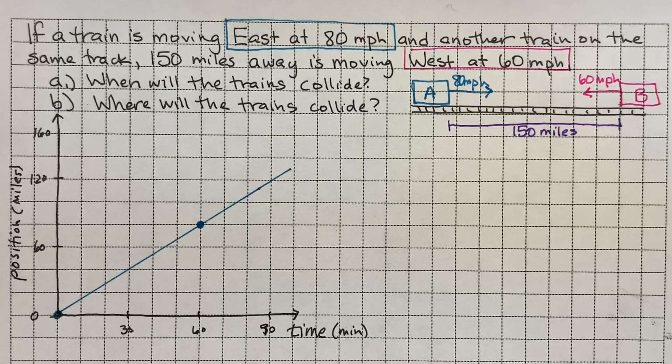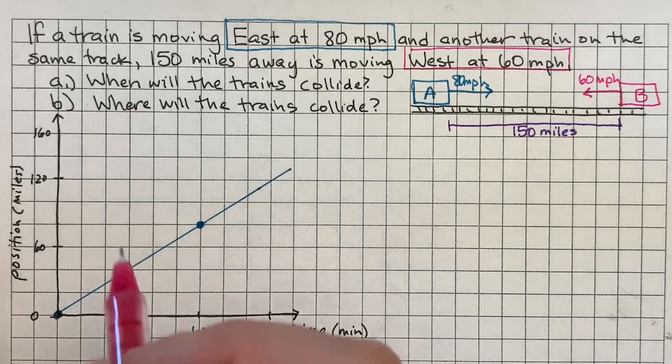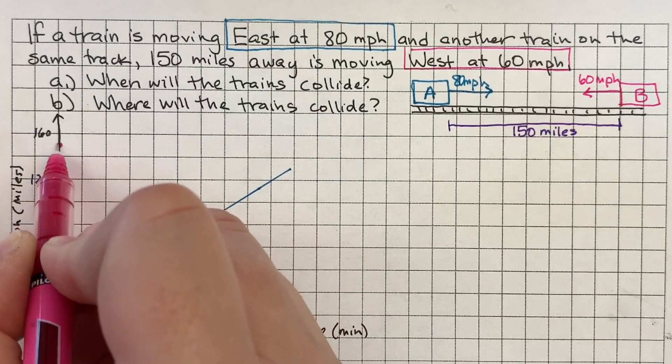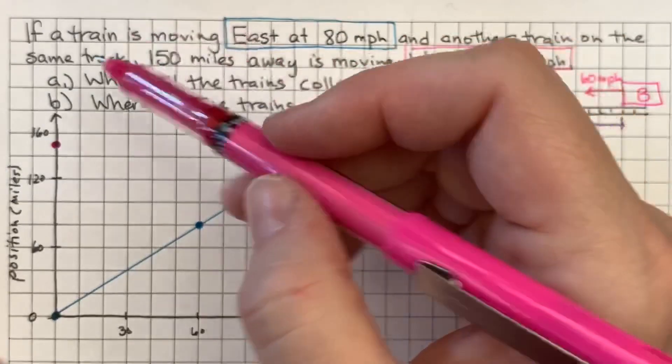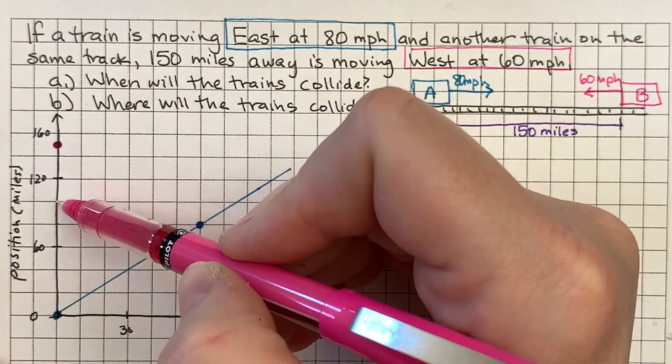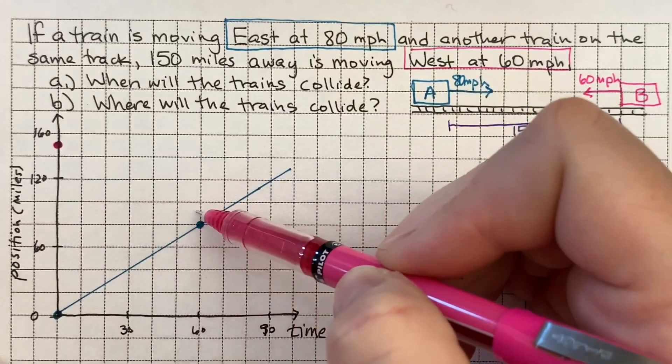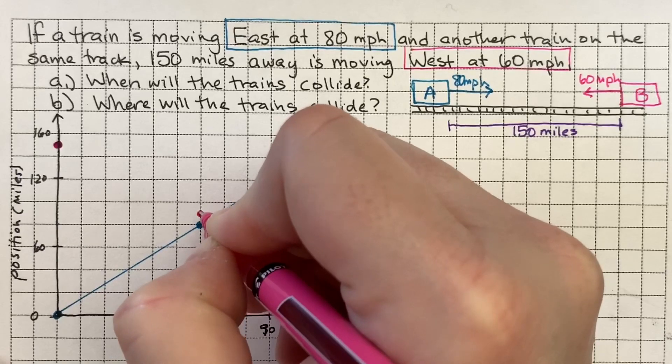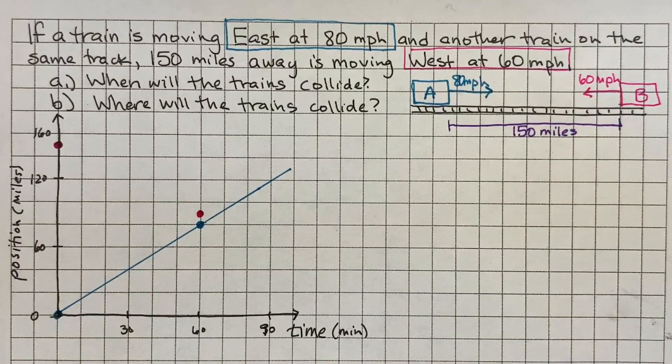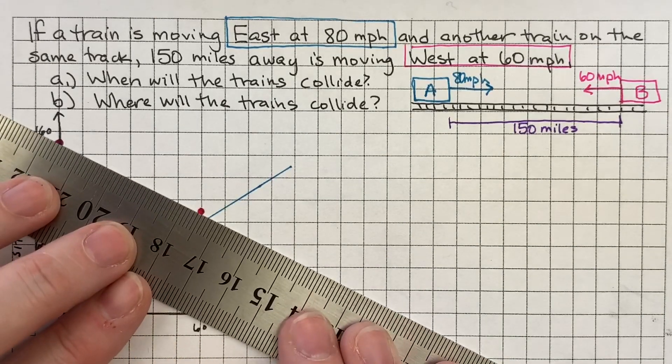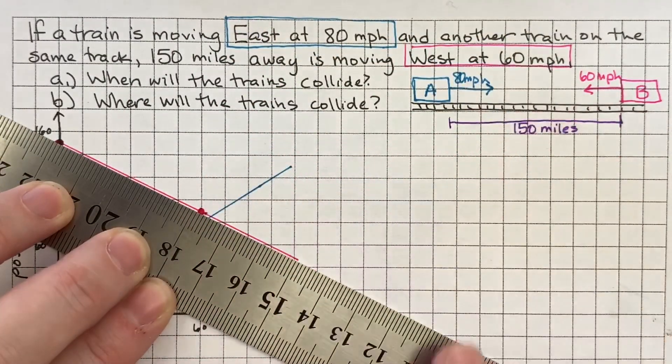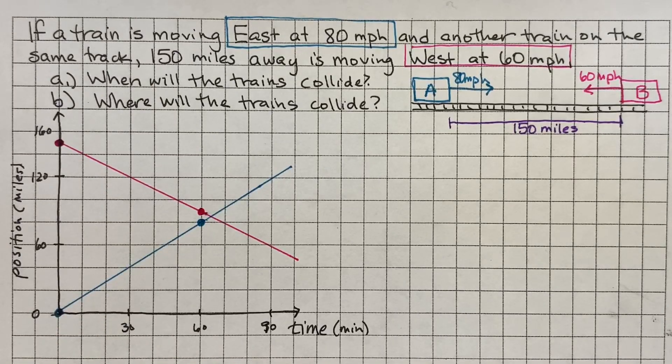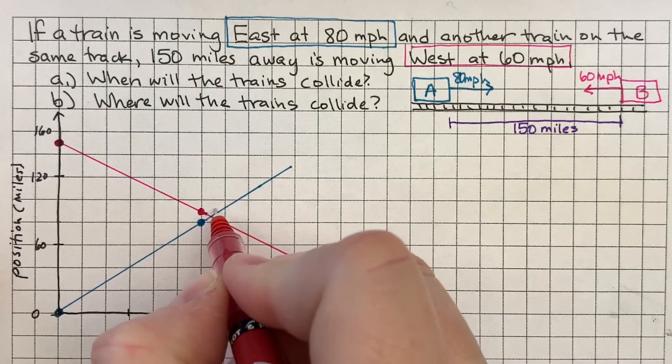So I know that train A is going to follow this linear path. And I know that train B is going to start 150 miles away. So 150 is right here. And then it has to go 60 miles an hour back this way. In an hour, it needs to go 60. So it'll go to right here. And I know this isn't perfect. And I could make this bigger. And if you graph this better, then you could get even better results.